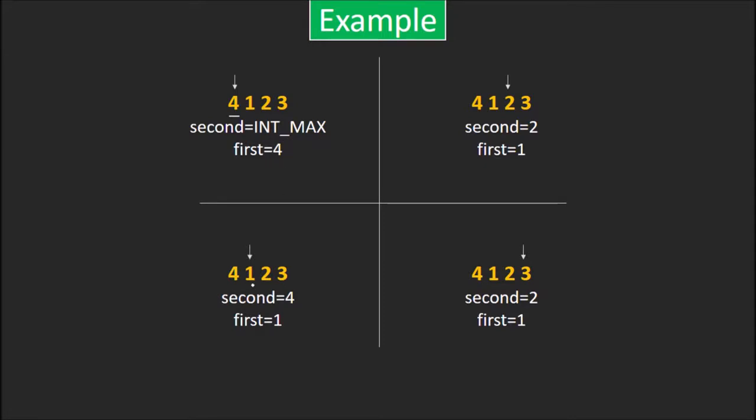Next element is 1 which is again smaller than first. So, second becomes previous value of first that is 4 and first becomes 1. Now, we reach 2 which is smaller than second but not first. So, only second will get updated and it becomes 2.